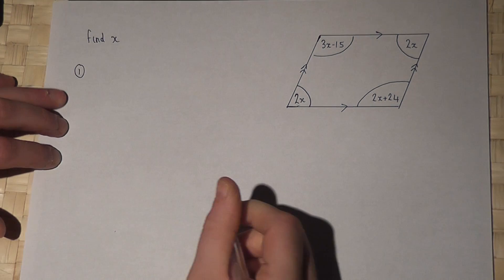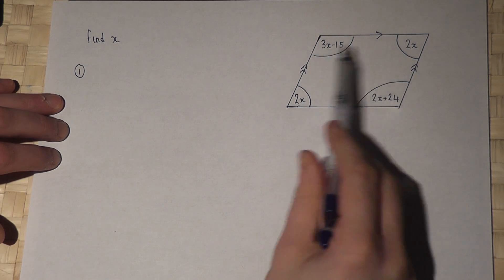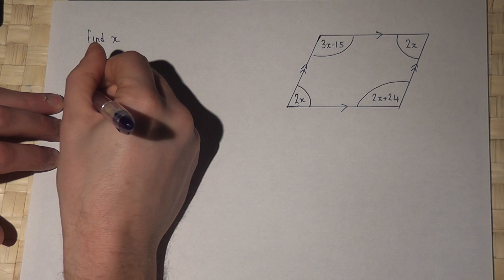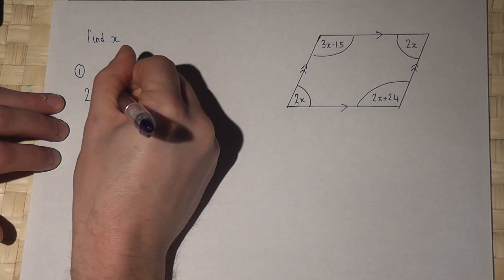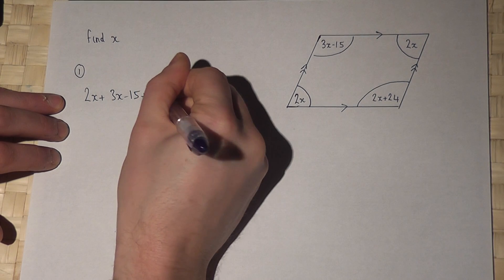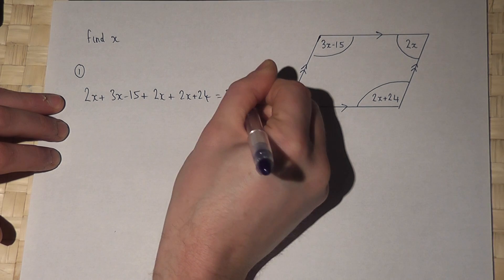Now method one is where you think four sides, four angles, therefore the sum of all the angles must equal 360. So 2x plus 3x minus 15 plus 2x plus 2x plus 24 must equal 360.